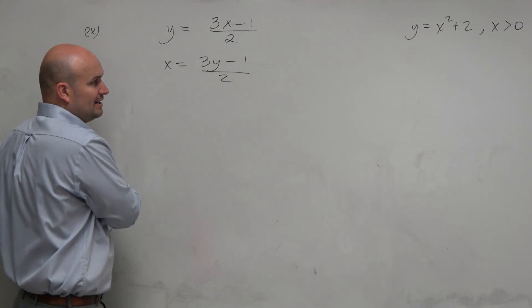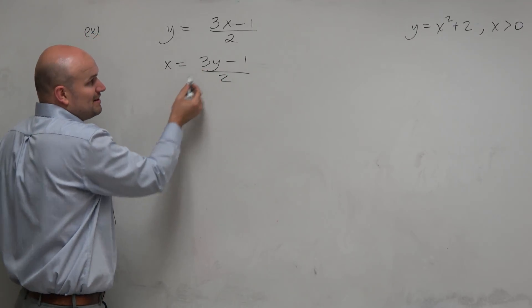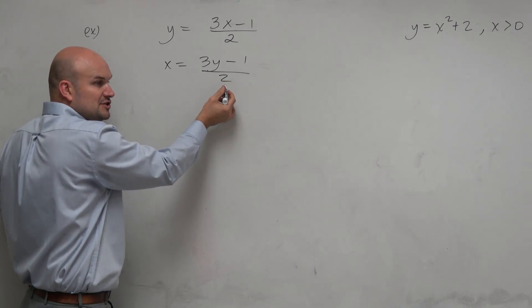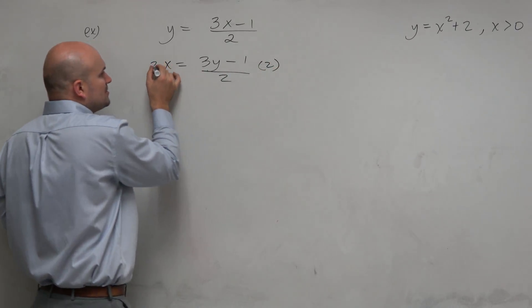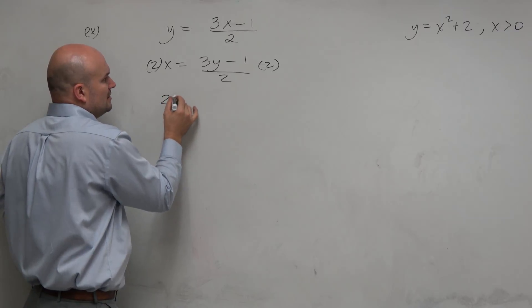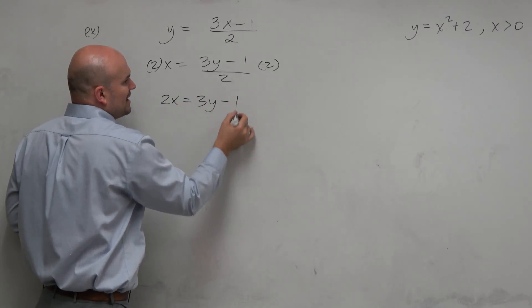Now we need to solve for y. And there's a lot of things going on. We're multiplying by 3, subtracted by 1, all divided by 2. First thing you want to do is get rid of the 2 in the denominator. So I'm going to multiply 2 on both sides. 2x equals 3y minus 1.